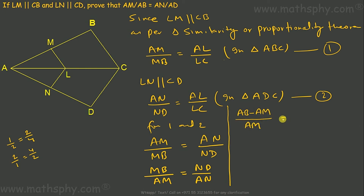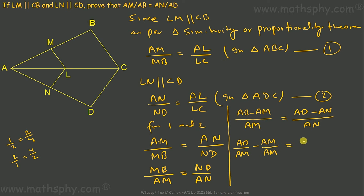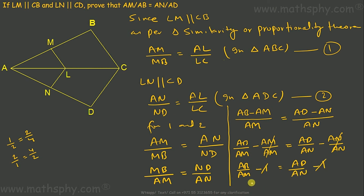Substituting: (AB minus AM) over AM equals (AD minus AN) over AN. Expanding gives AB over AM minus 1 equals AD over AN minus 1, so AB over AM equals AD over AN.